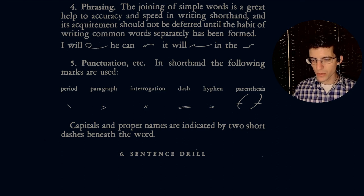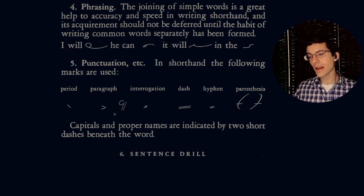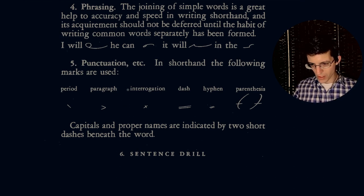Punctuation. In shorthand, the following marks are used: period, paragraph. And this is essentially what's known as a pilcrow. You'll see it a lot in legal documents. So it used to be a lot more common in books from a hundred years ago, when they wanted to mark the beginning of a paragraph, they would simply put the pilcrow symbol. So it's one of those obsolete symbols now.